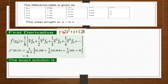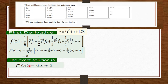Plugging into the first derivative formula with h equals 0.1, delta-f_n equals 0.28, and delta-squared equals 0.04, we get 3. To verify manually: the given equation is y equals 2x² plus x plus 1.28, whose first derivative is 4x plus 1. Substituting x equals 0.5 gives 3. Newton's backward difference works correctly.